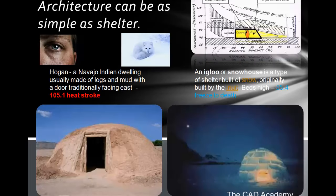Architecture is as basic as humans need shelter. We can be comfortable in 70 to 80 degrees with medium relative humidity, and anything other than that we need shelter so we can live.